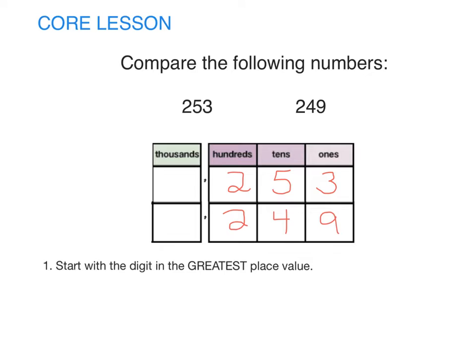First, start with the digit in the greatest place value. Both of these numbers have two hundreds. If they are the same, check the next greatest place value. Five tens is more than four tens, so 253 is greater than 249.